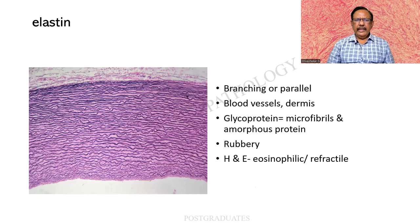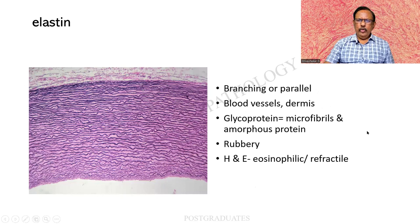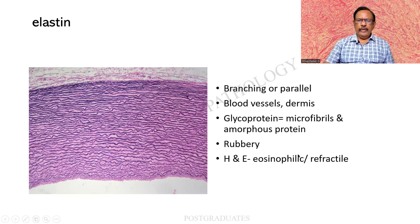This is another friend — the elastin. Beautiful, slender, wavy, parallel or branching fibres. They occur normally in the blood vessels and in the dermis. Elastin is a glycoprotein equal to microfibrils plus amorphous protein. The elastin by itself has a rubbery consistency — that is why it can recoil. Under routine H&E stains, they are all eosinophilic and refractile. But here each fibril has been individually brought out beautifully.